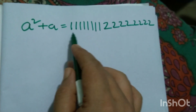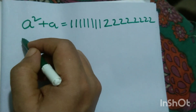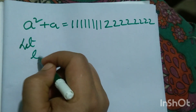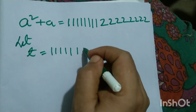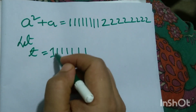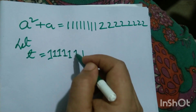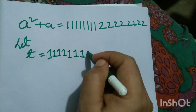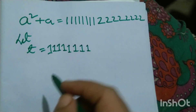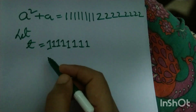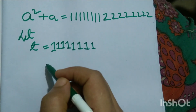Let's take t as the left side. The total comes out to 8 elements of t, and it can be written in a specific form.